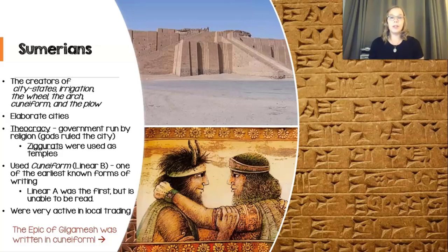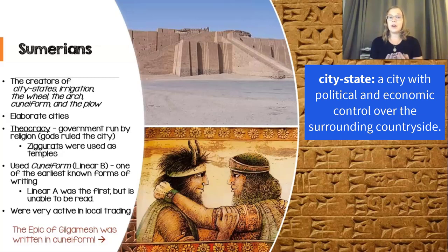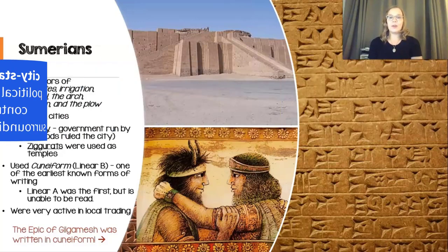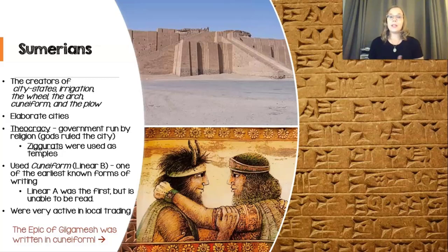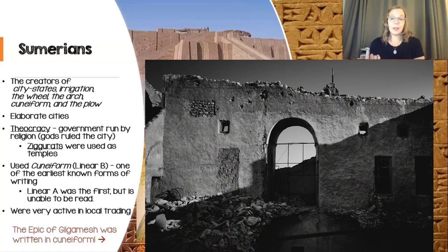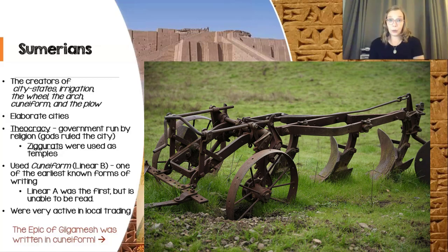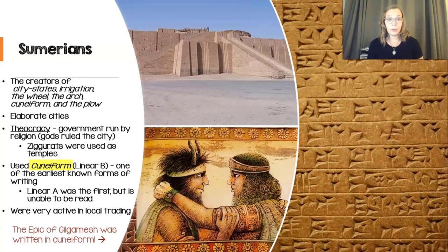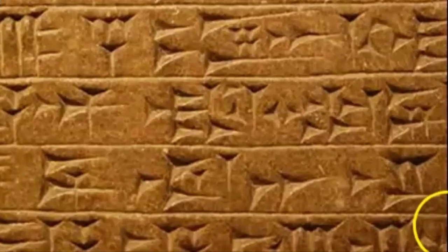The Sumerians were creators of city-states, which is just the idea of a large city governing itself. Cities that ran themselves politically. They were also the creators of irrigation, which we just talked about. They were the first to invent the wheel — pretty important — and the arch, also important for architecture. They developed the plow, very big for agriculture, and they also created something called cuneiform, which was their system of writing.